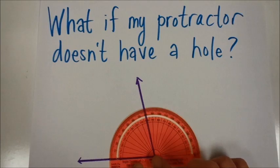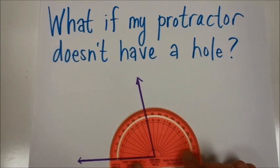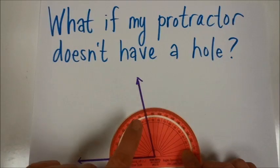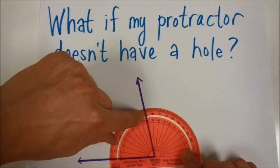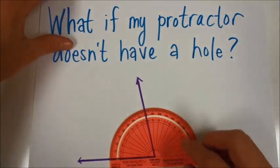So you're going to put the intersection of those right there at the vertex, make sure that the zero is lined up here, and then read it just like before. It's looking like it's lining up right to the 80 right here, just 10 degrees less than the right angle, or 90 degrees.